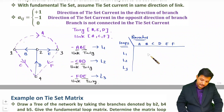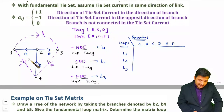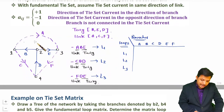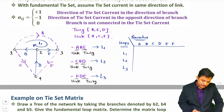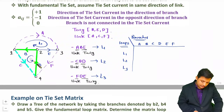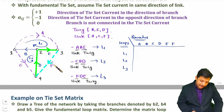First draw the tie set current directions. For loop L1 — that is A, B, E — the direction of the loop should be in the direction of link A. For L2 — that is C, B, D — the loop direction is in the direction of link C. For L3 — that is F, D, E — the loop forms in the direction of link F.